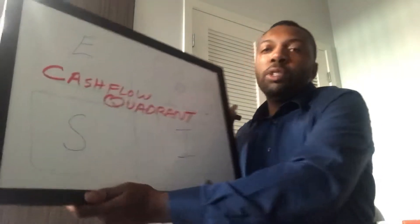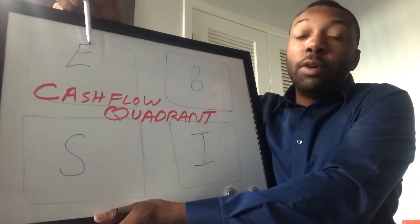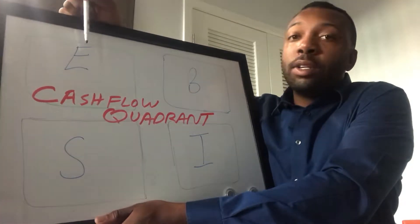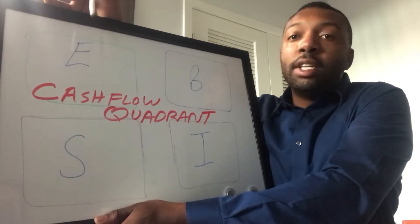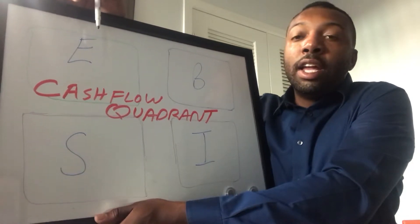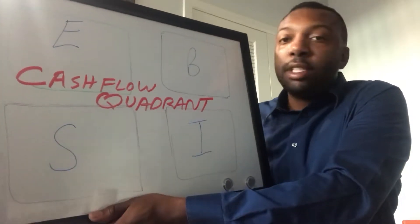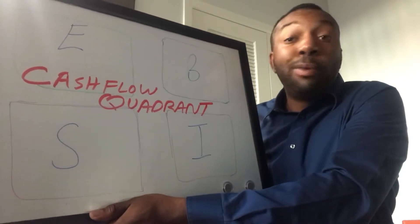The first quadrant most people fall into is employee — someone who has a job. The income is based on the position, not the person. A lot of times, depending on the company culture, you're paid based on the position, not necessarily your efforts. You may have worked with a slacker at a summer job, internship, or current career —